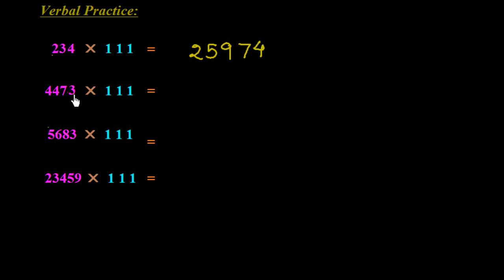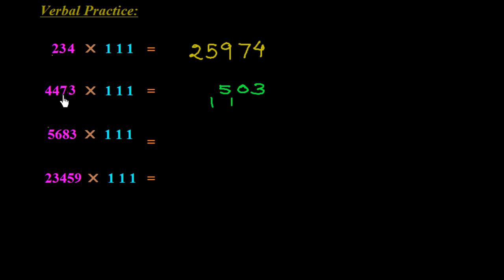Next, 4473 × 111. Write 3 first. Then 3 plus 7 is 10 — write 0, carry 1. Then 4 plus 7 plus 3 is 14 plus 1 carry is 15 — write 5, carry 1. Then 4 plus 4 plus 7 is 15 plus 1 carry is 16 — write 6, carry 1. Then 4 plus 4 is 8 plus 1 is 9, and last digit 4. Answer: 4, 9, 6, 5, 0, 3.